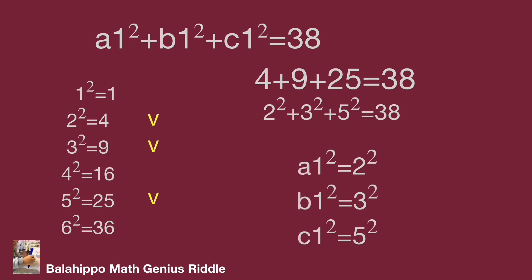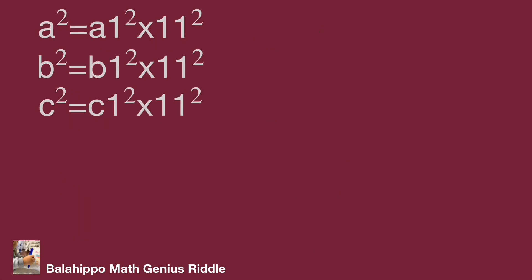Now we get a1 squared equal to 2 squared, b1 squared equal to 3 squared, c1 squared equal to 5 squared. Then substitute a1, b1, c1 value in these equations.